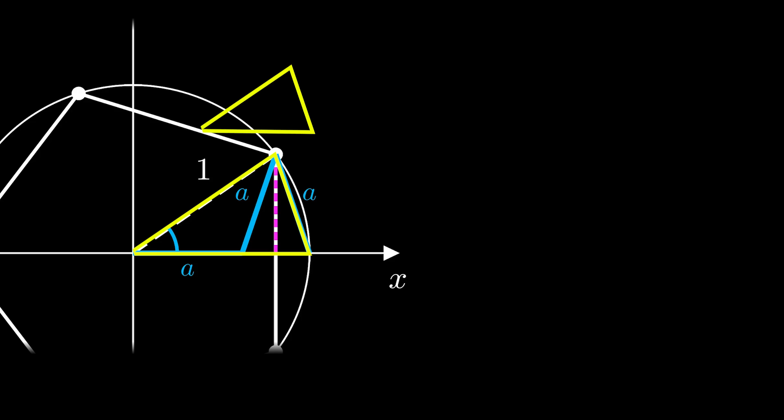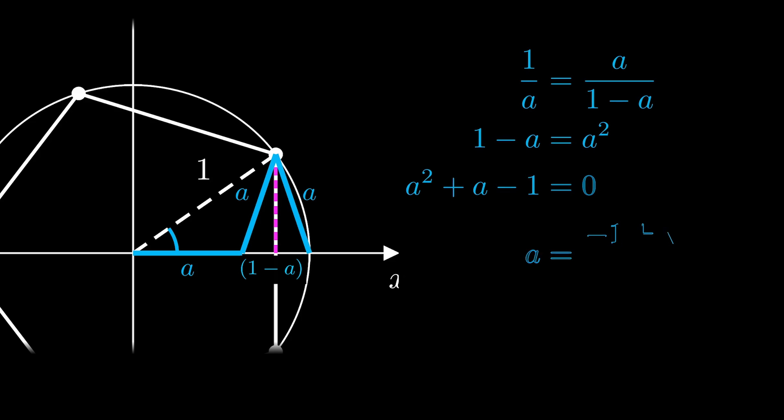In similar triangles, the ratios between side lengths must be equal. We can use that fact to set up this ratio. 1 divided by a must be equal to a divided by 1 minus a. Then solve for a using the quadratic formula, which would give two solutions, but we know it must be positive, so we just take this one. Turns out to be 1 over the golden ratio φ.